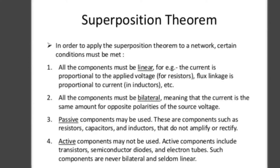Only passive components may be used — components such as resistors, capacitors, and inductors that do not amplify or rectify. Active components may not be used. Active components include transistors, semiconductor diodes, and electron tubes. These components are never bilateral; hence they are not used in superposition theorem. If the circuit consists of diodes, transistors, or electron tubes, these are non-linear elements and superposition theorem cannot be applied.